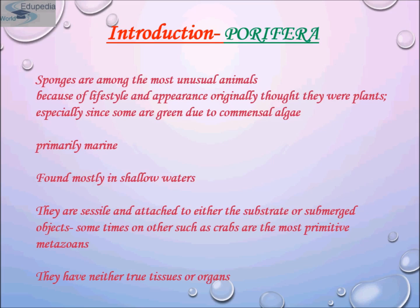Some species contain toxic substances, which probably discourage predators. Certain other marine animals take advantage of this by placing adult sponges on their bodies, where the sponges attach and grow. The chemicals also probably play a role in competition among sponges and other organisms, as they are released by sponges to ensure space in the marine ecosystem.